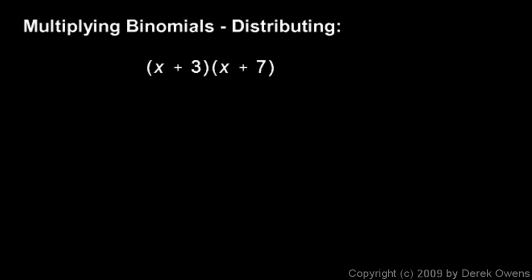One way to think about multiplying binomials is to think of it as distributing. I'm going to take this x plus 3 and multiply it by the x and by the 7. So essentially think of this thing as being distributed across these two terms in the x plus 7. And so here's what you get.